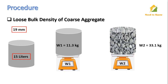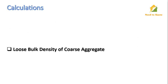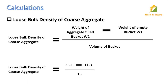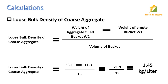Now calculate the loose bulk density. The formula is: subtract the weight of the empty bucket from the weight of the aggregate-filled bucket and divide by the volume of the bucket. Substituting the values: the weight of the aggregate-filled bucket was 33.1 kg, the weight of the empty bucket was 11.1 kg, and the volume of the bucket was 15 liters. From the calculation we get 1.45 kg per liter as the loose bulk density of the coarse aggregate.